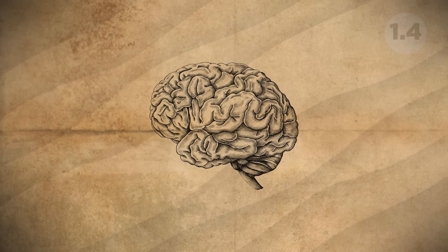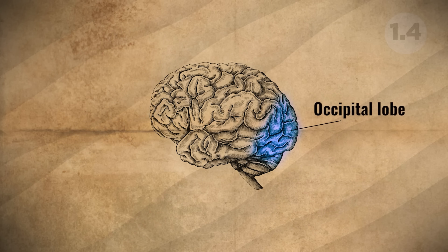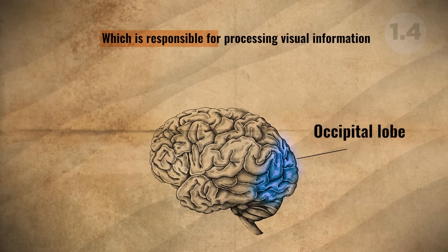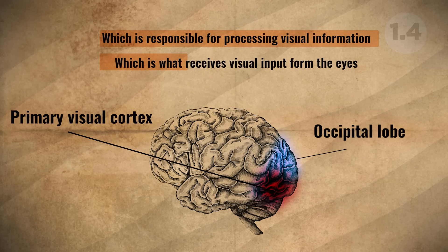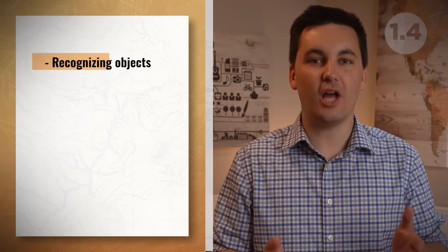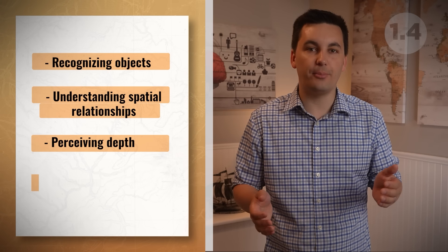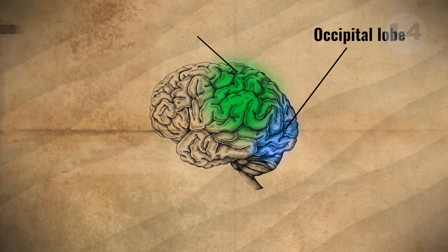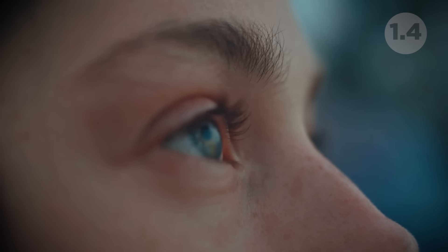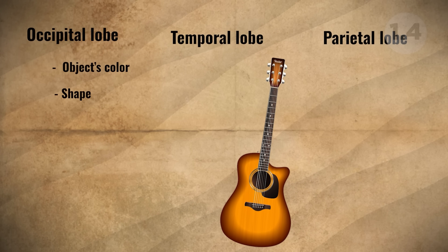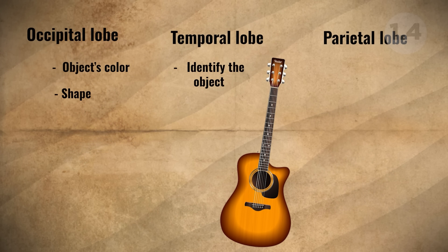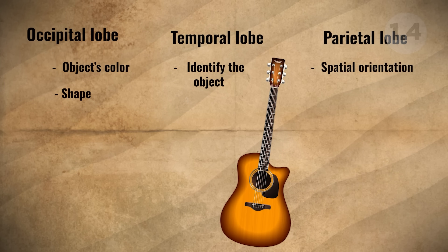The occipital lobe, located at the back of the brain just above the cerebellum, is responsible for processing visual information. It contains the primary visual cortex, which receives visual input from the eyes. The occipital lobe processes not only basic information but complex visual tasks as well — recognizing objects, understanding spatial relationships, and perceiving depth and movement. It also works with the parietal lobe and temporal lobe: the occipital lobe detects an object's color and shape, the temporal lobe helps identify the object, and the parietal lobe helps understand spatial orientation.